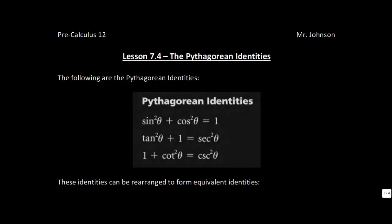This is lesson 7.4, the Pythagorean identities. In this lesson, the focus is on trying to prove and to apply the three Pythagorean identities.